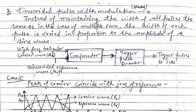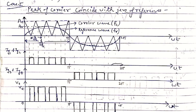In this sinusoidal PWM technique we will take two case studies. The first one is where the peak of the carrier coincides with the zero of the reference. The carrier wave is triangular having amplitude AC, and the reference waveform is sinusoidal passing through zero at the origin. So the zero of the reference wave coincides with the peak of the carrier wave at the starting point — peak of the carrier is at origin and zero of the reference is also at origin.